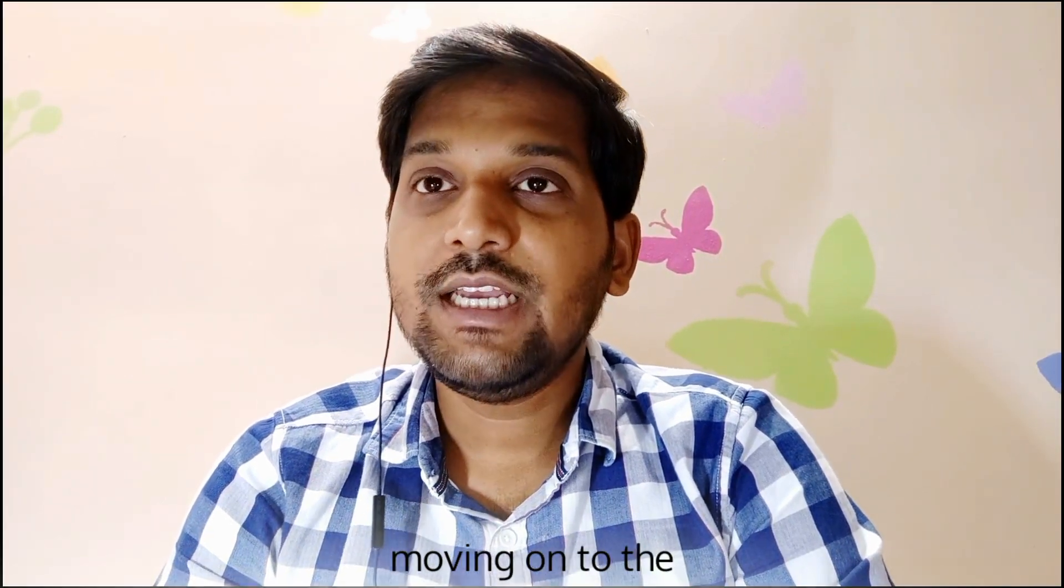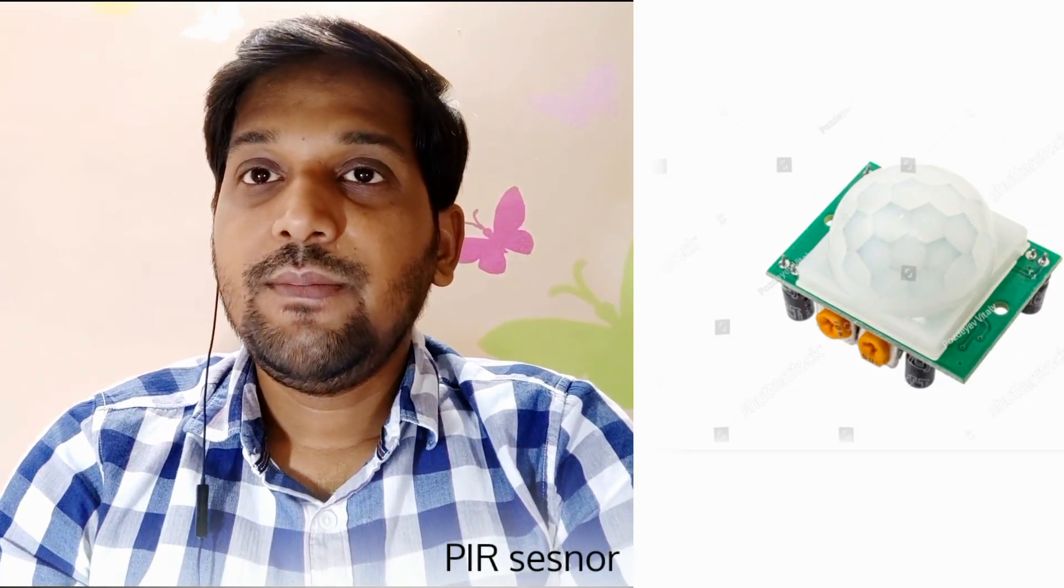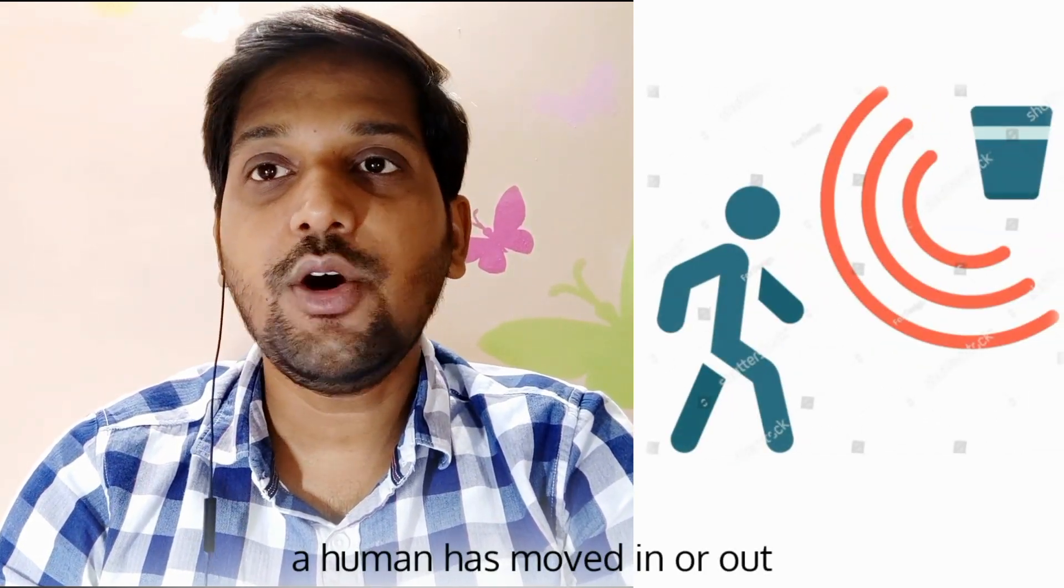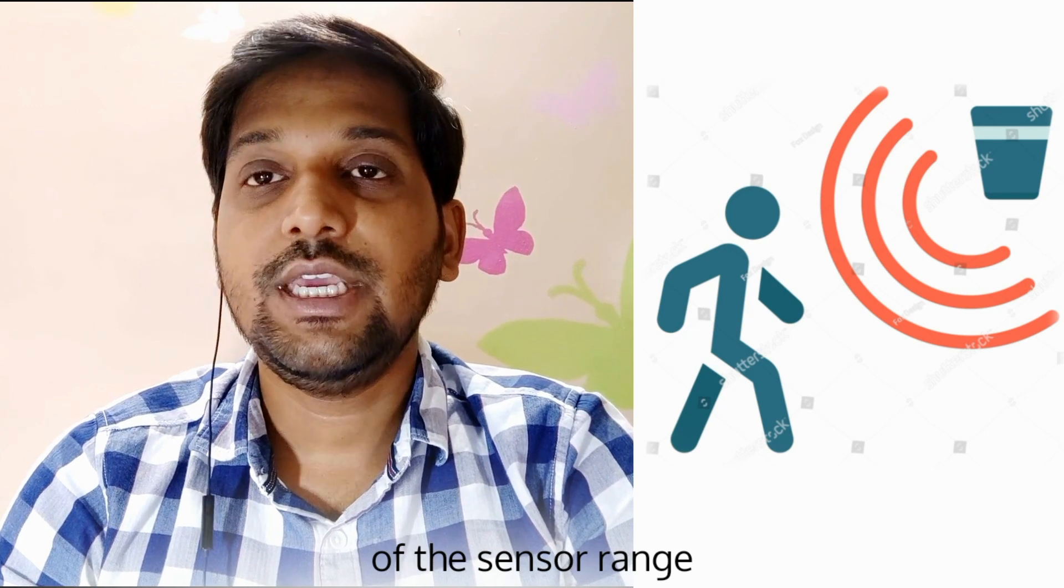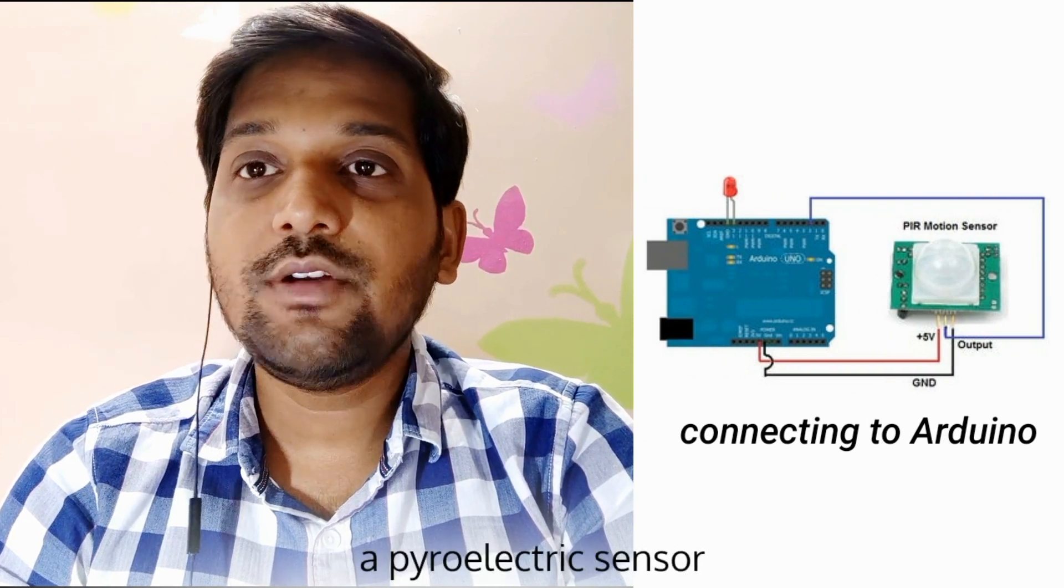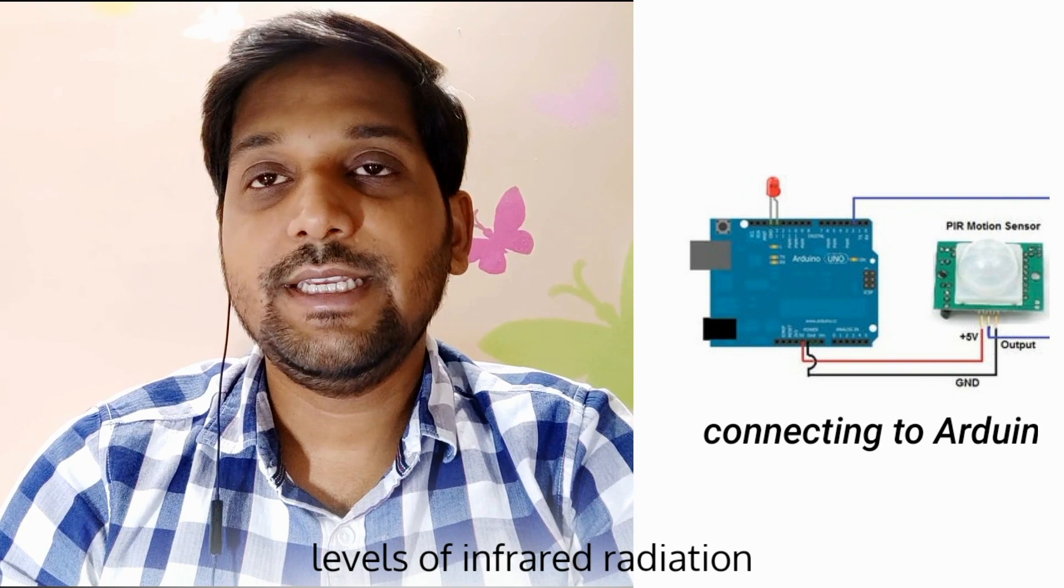Moving on to the next component, the passive infrared sensor, also known as PIR sensor. PIR sensor allows you to sense motion. Almost always used to detect when a human hand moves in or out of the sensor range. They are small, low power, easy to use. PIR is basically made of a pyroelectric sensor which can detect levels of infrared radiation.